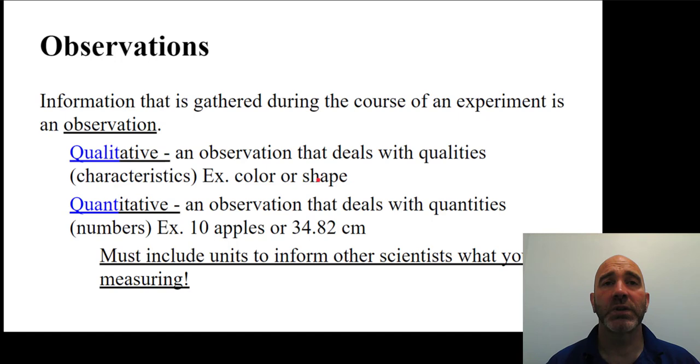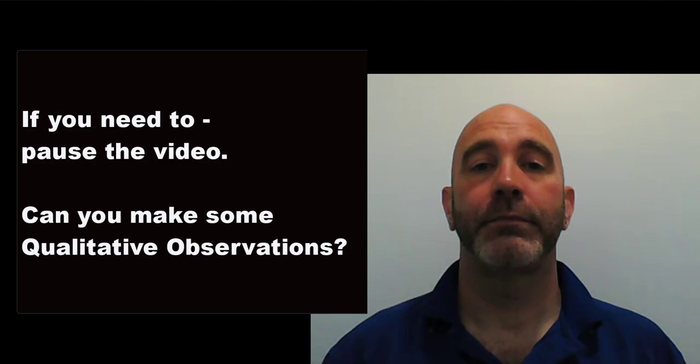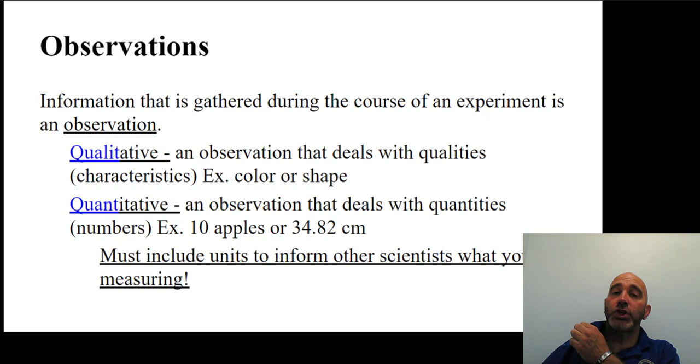So let's play a game really quick. What observations can you make about Mr. Fay? Did you observe that my shirt is blue? Cool. Did you observe that my wall back here is white? Those are two visual observations about colors. That's good.